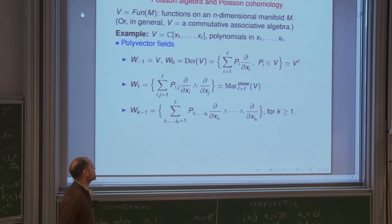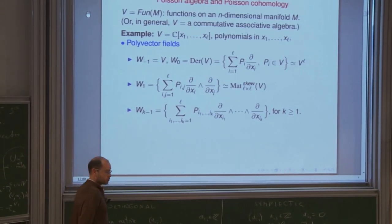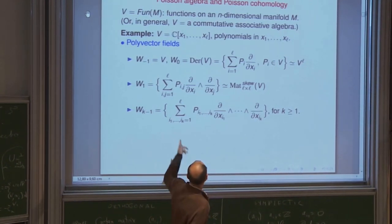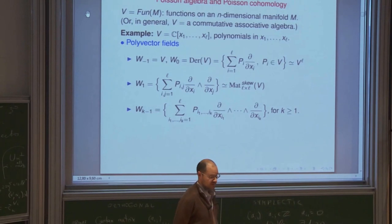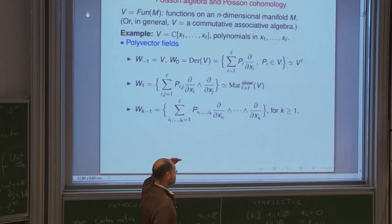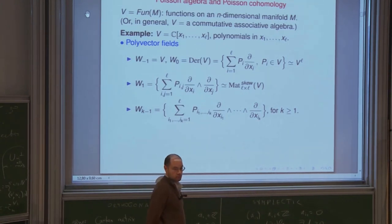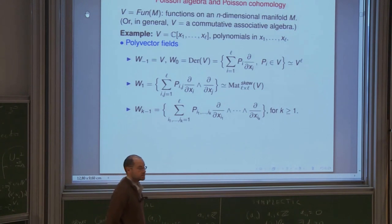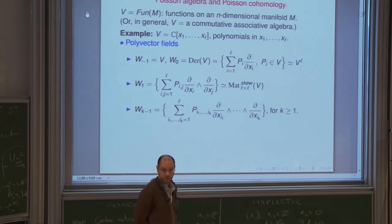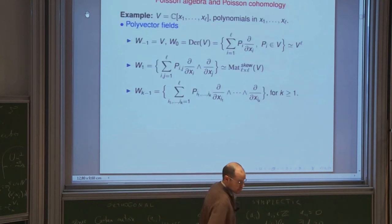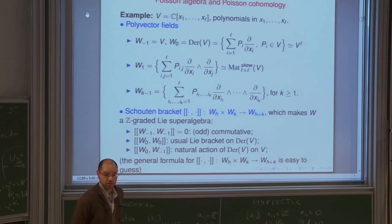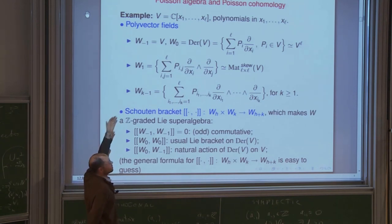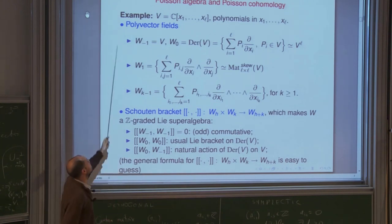Starting with this commutative associative algebra, we construct the space of polyvector fields, which is a Z-graded space. The minus-first degree component is V itself. The zero degree component is the space of all derivations — in this example, all vector fields of the form sum of p_i d/dx_i. The next one is bivector fields p_{ij} d/dx_i d/dx_j. For arbitrary k you have poly-k-vector fields. On this space you put a structure of a Z-graded Lie algebra called the Schouten bracket.